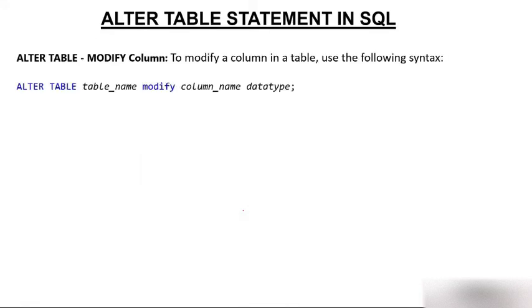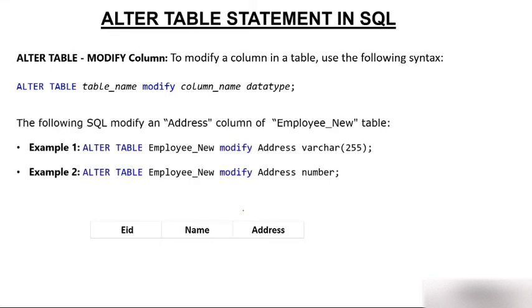ALTER TABLE can also modify a column. To modify a column in a table, the syntax is: ALTER TABLE, then table name, then MODIFY instead of ADD, then the column name, and you can change the data type. For example, if the data type was NUMBER and you want to change it to VARCHAR, you can do that.